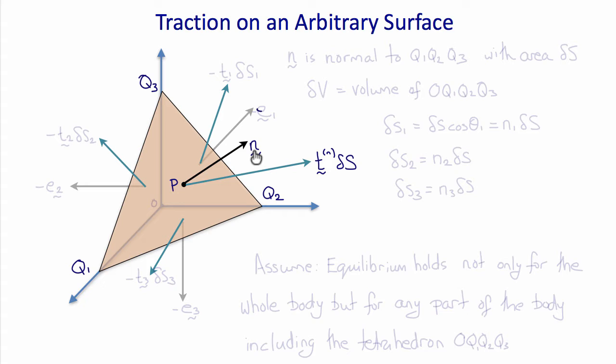And if we look at the back side of this tetrahedral volume and consider that there are reaction forces on each of these faces, then we could label them minus T1 times delta s1, the area of this triangle, on the face whose normal is minus E1, minus T2 delta s2 on the face whose normal is minus E2, and minus T3 delta s3 on the face whose normal is minus E3.